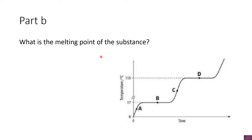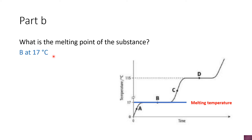Part B: what is the melting point of the substance? The melting point is when the solid turns to a liquid. According to this graph, it is at the horizontal line where the solid changes to liquid — that phase change line. So the melting point of the substance is 17 degrees Celsius.